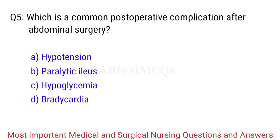Q5. Which is a common postoperative complication after abdominal surgery? The right answer is Option B: Paralytic ileus.